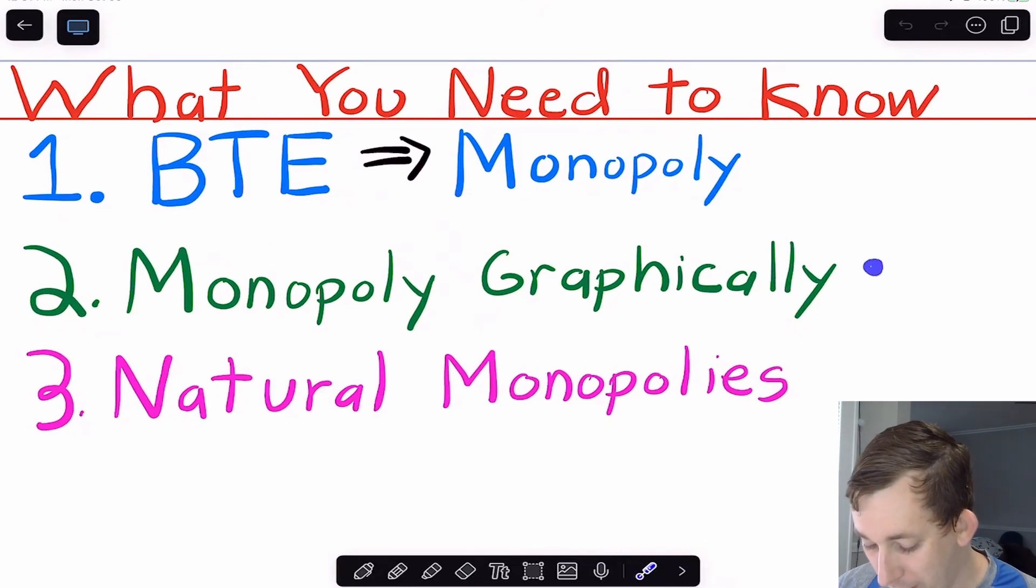Then we're going to talk graphically about monopoly. I'll show you the graph and we'll derive a new one together. And then I'm going to talk about natural monopolies in terms of what they are, why they appear, and why they make sense.